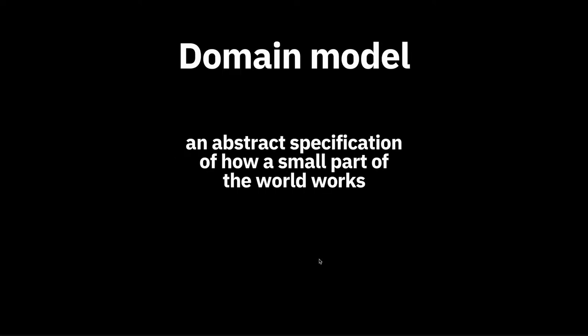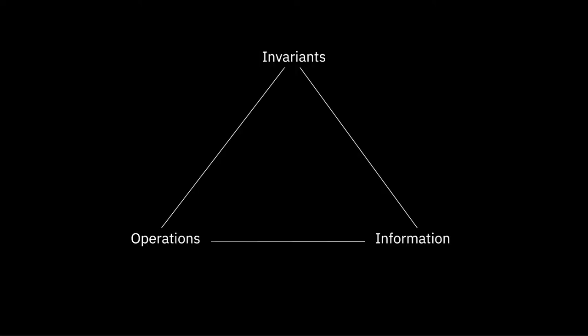To do that, we build a domain model — an abstract specification of how a small part of the world works. A small part of the world is the domain. Abstract means it leaves out unnecessary details like what database it runs on or what language you'd write it in. Specification just means it has to be complete and correct. Domain models have three parts: information — the relevant information you need to capture — operations on that information, and invariants about what must always be true within the model.